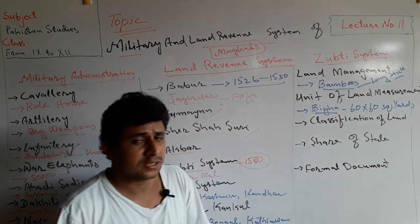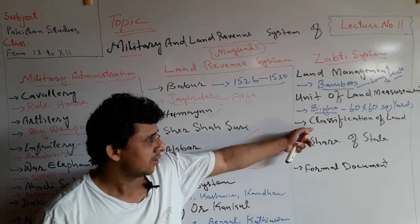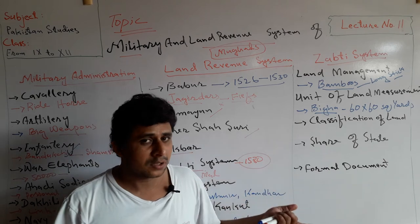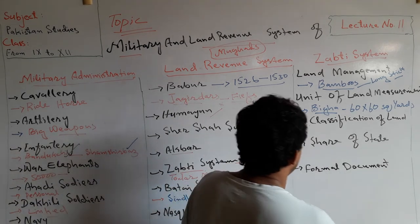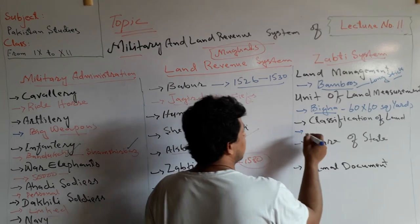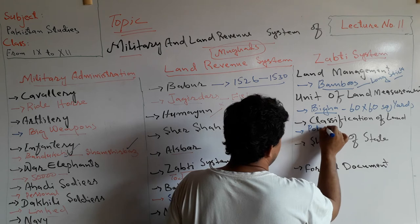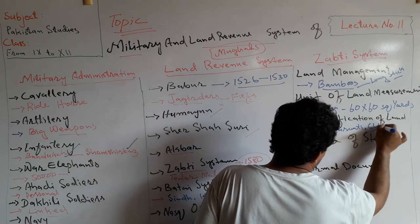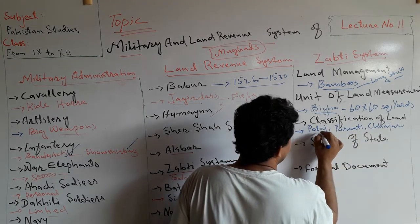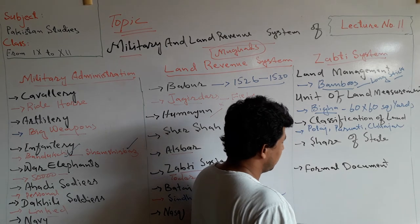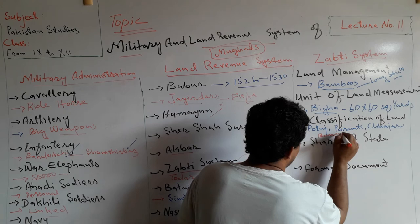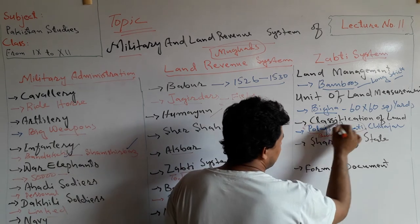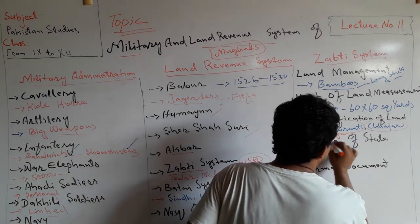The Bega was the main unit of land measurement. Land was classified into four categories by Akbar: Polaj, Parvati, Chachar, and Banjar. Polaj was good and fertile land, followed by Parvati, Chachar, and Banjar in descending order of quality.